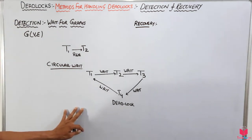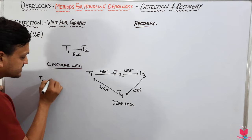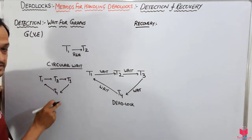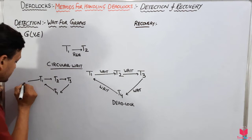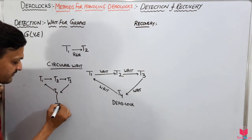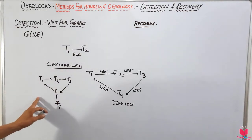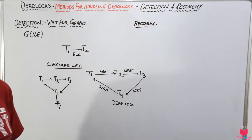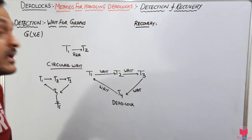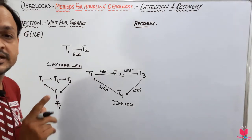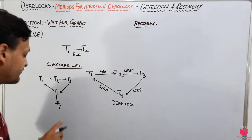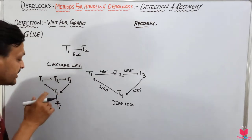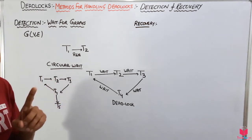Sometimes the question is asked differently. Suppose we have the same cycle T1 → T2 → T3 → T4, but there is an additional transaction T5 that is releasing resources to T4. Is this a circular wait or not? No, this is not a circular wait, because T5 is not requesting any other transaction to release its resources — T5 is not in a waiting state. According to the definition of deadlock, all transactions in the system must be in a waiting state. When T5 releases its resources, they will be given to T4, breaking the deadlock.